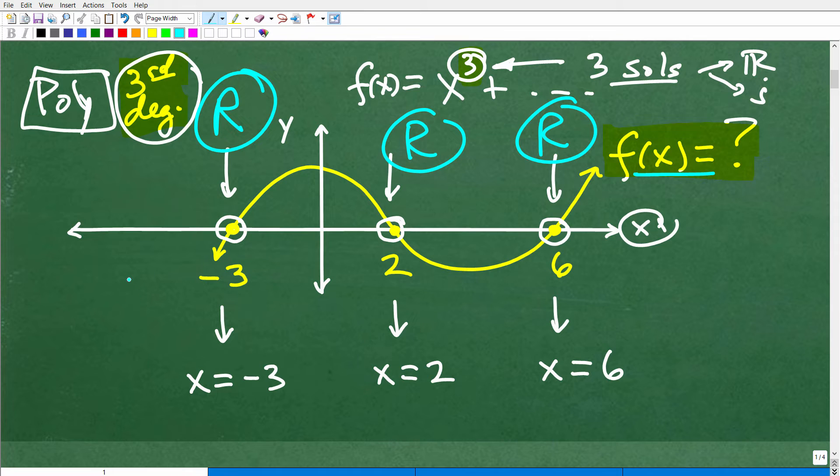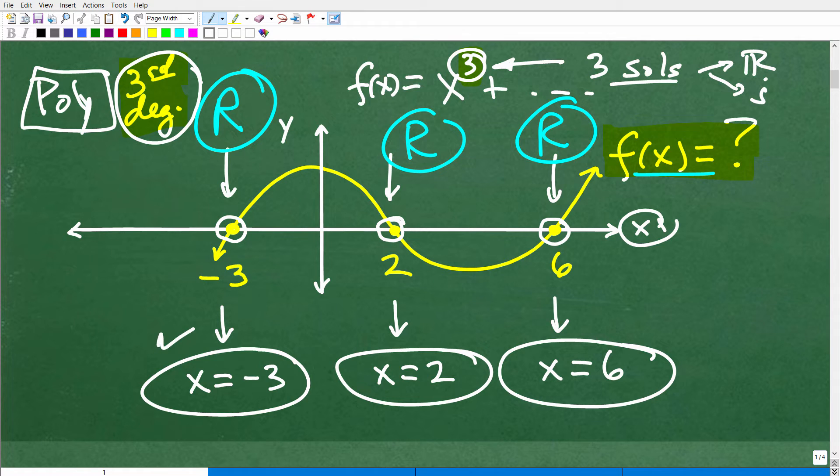If I'm told this is the graph of a third degree polynomial, and I can see it's going through the x-axis here, here, and here, these are real number solutions. So negative 3, 2, and 6 are our solutions to this polynomial equation. Remember, the x-intercepts are those real number solutions to that particular function. That's a pretty big principle or concept in mathematics.